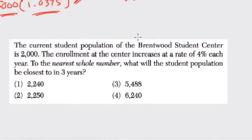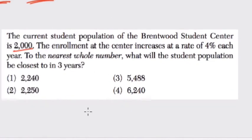Okay, here we have a student population at 2,000. So our starting amount is 2,000. The enrollment increases at 4% each year. So what's going to happen in three years?